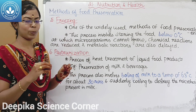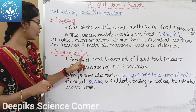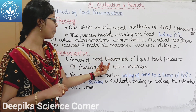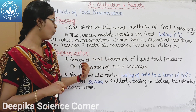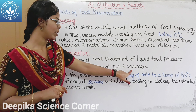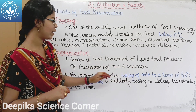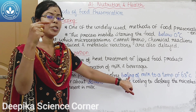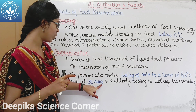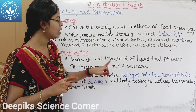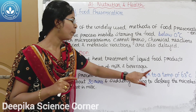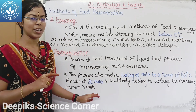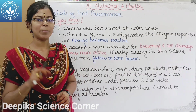The sixth method is pasteurization — a heat treatment applied to liquid food products. For example, for preservation of milk and beverages, milk is boiled to a temperature of 63 degrees Celsius for about 30 minutes, then cooled to destroy the microbes present in the milk.